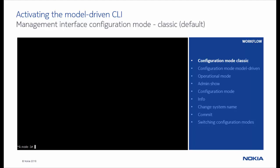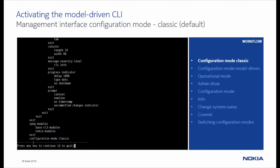We can change the router to the model-driven CLI mode by configuring the option in the system management interface. Looking at the CLI, the info details show the default configuration mode set to classic.